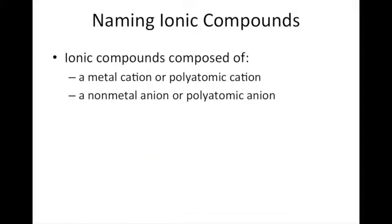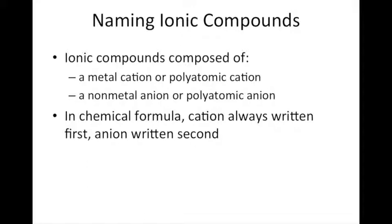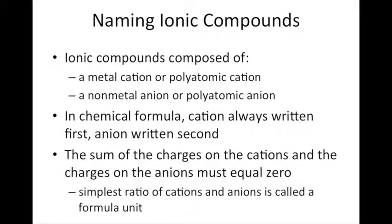Ionic compounds are composed of either a metal cation or a polyatomic cation, ionically bonded to either a nonmetal anion or a polyatomic anion. When we write the chemical formula, the cation is always written first and the anion is always written second. When you pair the cations and anions, the sum of the charges must add up to zero. The simplest ratio of cations to anions with a net zero charge is called a formula unit.